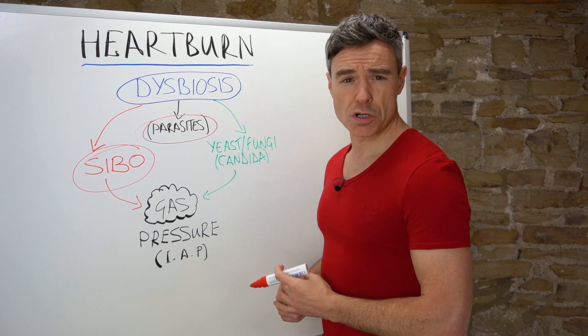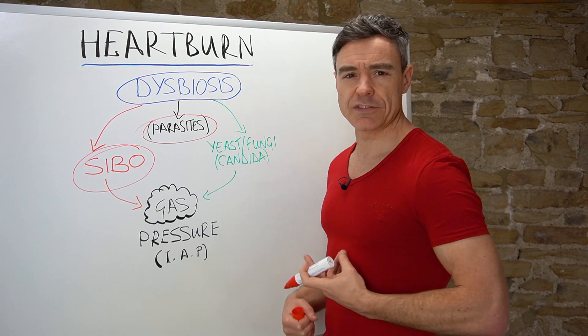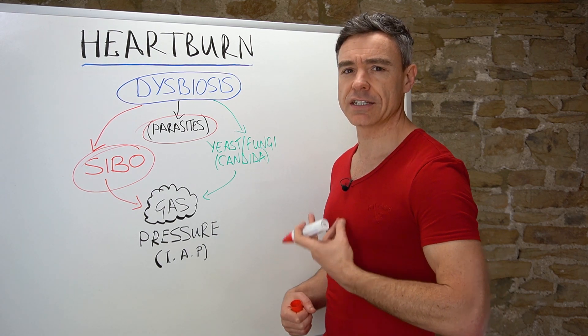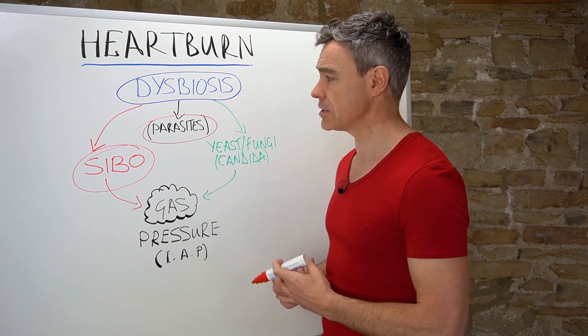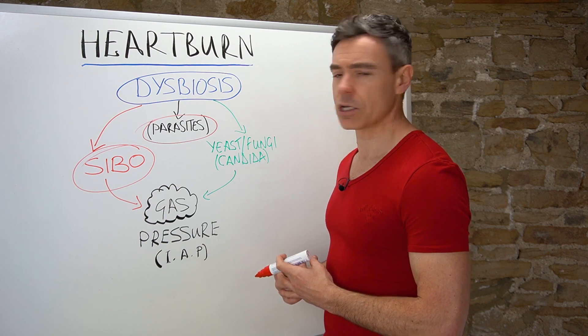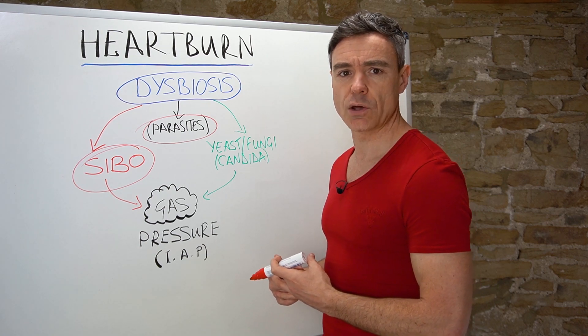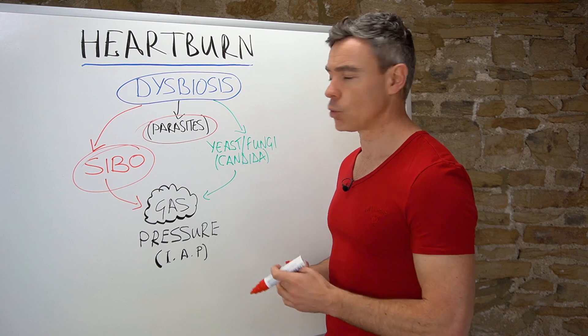There's a couple of worm species, for example, that can live quite high up in the small intestine, and they can lead to very similar symptoms as people would have when they have things like stomach ulcers. One of them in particular is called strongyloides, which is a tiny little worm.